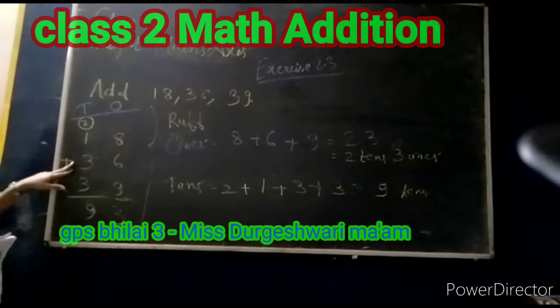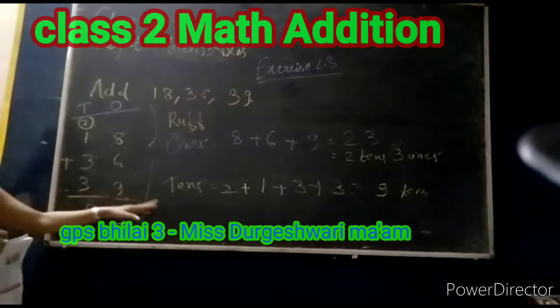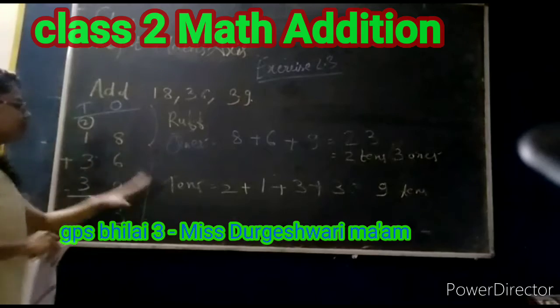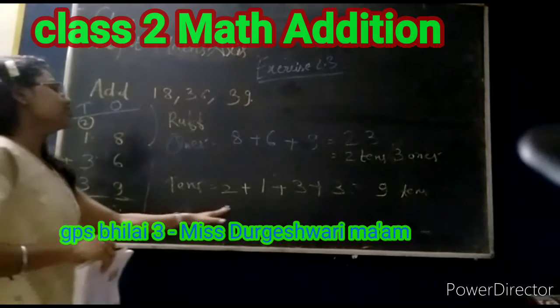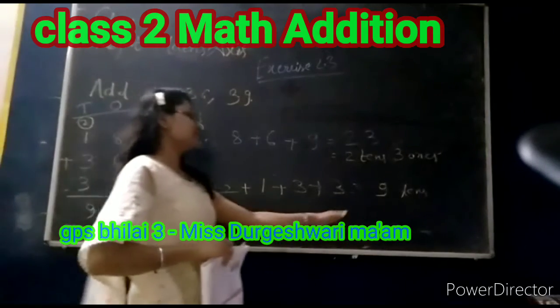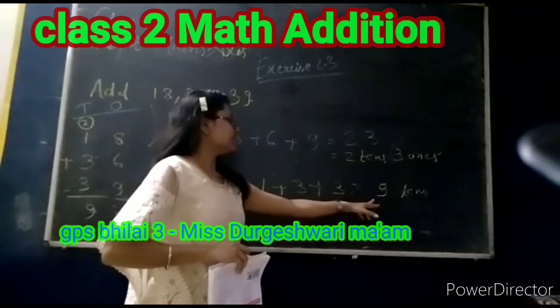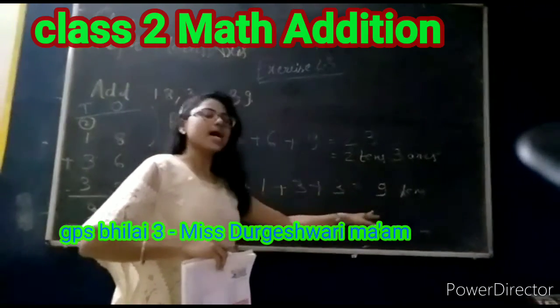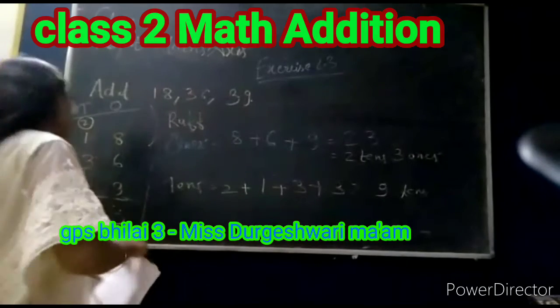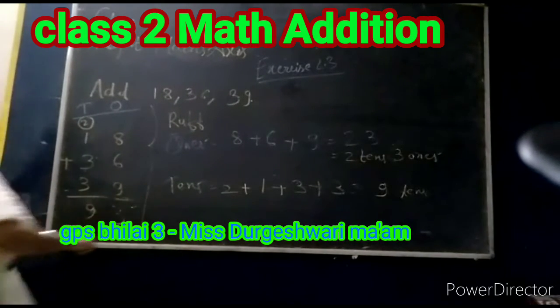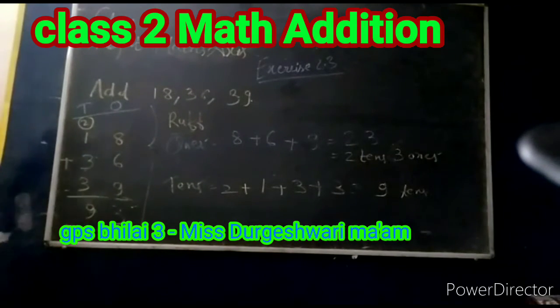Now the tens column: 2 plus 1 plus 3 plus 3. Follow the tens column — 2 plus 1 plus 3 plus 3 becomes 9. That is 9 tens. The answer will be 93.